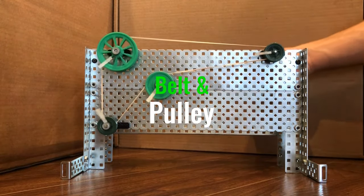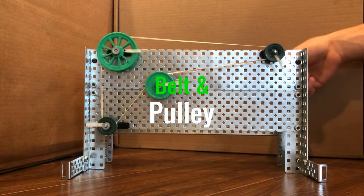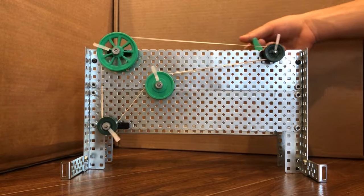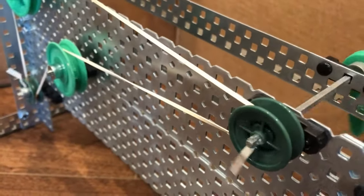Belt and pulleys use an input rotary motion in the form of a pulley to drive a belt. This belt then drives one or more output pulleys in the form of rotary motion.